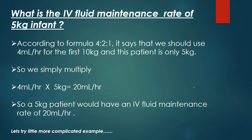What is the intravenous fluid maintenance rate of a 5 kilogram infant? According to the 4-2-1 formula, we use 4 milliliters per hour for the first 10 kilograms. Since this patient is only 5 kilograms, we simply multiply: 4 mL/hr × 5 kg = 20 milliliters per hour. So a 5 kilogram patient would have an intravenous fluid maintenance rate of 20 milliliters per hour.